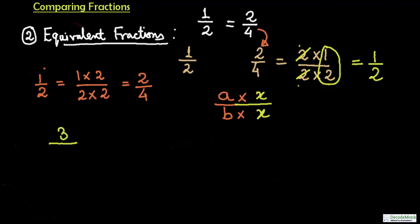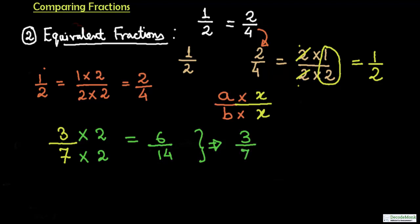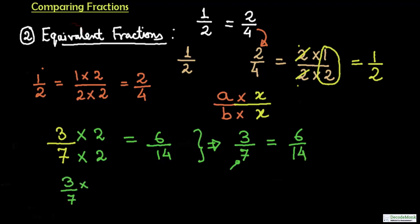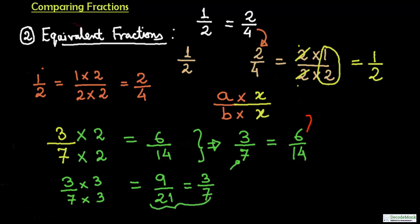Consider the example 3 upon 7. If we multiply the top number by 2 and the bottom number by 2, we get 6 upon 14. We started with 3 by 7 and finished at 6 by 14. If we multiply both by 3 instead, we get 9 upon 21, which is again equal to 3 upon 7. So we can say that 3 upon 7 equals 6 upon 14, which equals 9 upon 21.